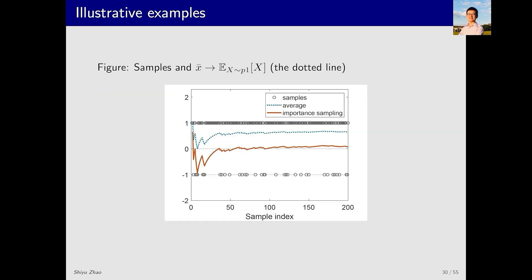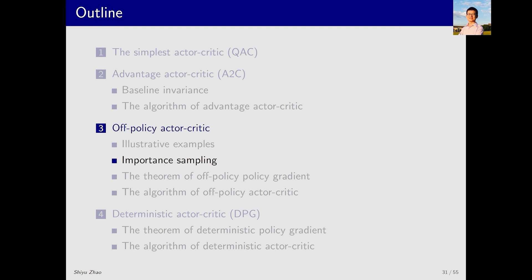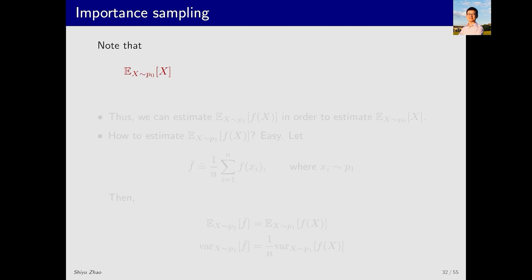Let's look at an intuitive example. When x equals positive 1, the probability under p1 is 0.8, and when x equals negative 1 the probability is 0.2. With 200 samples, the number of samples of positive 1 is much larger than the number of samples of negative 1. The dashed line represents x-bar — without surprise it converges to 0.6, the expectation under p1. The red line is the result when we apply the importance sampling technique to the same samples; with this technique the result converges to the expectation under p0, which is zero.